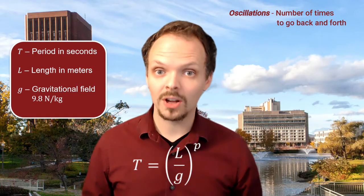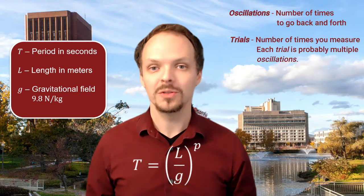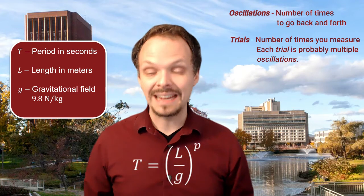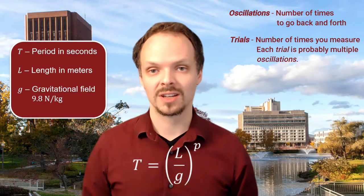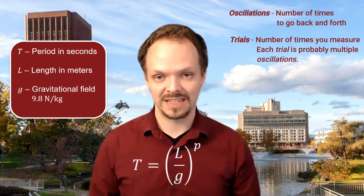We'll also talk about the number of trials. Now, in order to reduce the statistical uncertainty, you're probably going to want to do several trials, each of multiple oscillations. For example, you may do three trials of five oscillations each.